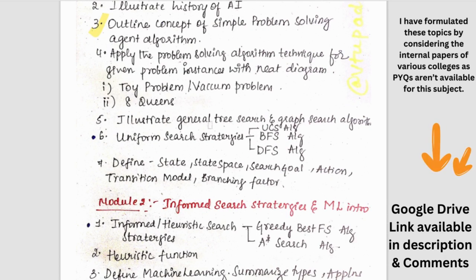Then we have the general tree search and graph search algorithm. So just have a look and read because it is pretty easy to understand. And then this is important question because uniform search strategies - we have UCS uniform cost search, BFS and DFS algorithm. So along with this they can give us a problem also to solve.